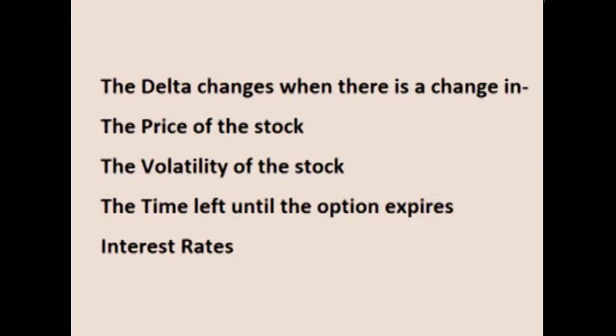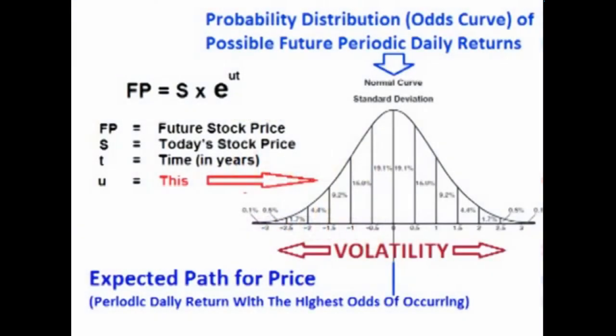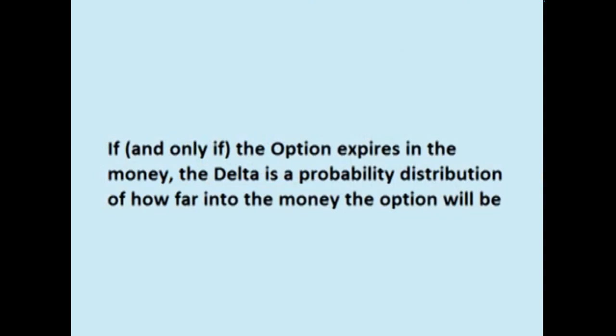Therefore, if that is true, a bunch of theories must apply — one can place offsetting trades and make more money than one can make on a risk-free investment such as a U.S. government bond, without risk of loss. Delta hedging must be adjusted for more than just changes in the price of the stock, as the delta also changes when there is a change in volatility, interest rates, or the time left until the option expires. Trading a hedged position is called delta neutral trading. An option's delta is derived using probability — one can create a probability or odds curve of what the future value of the stock will be. For a call option, the delta is derived from a probability distribution of the future value of the stock, multiplied by the probability that the stock will be above the option strike price. Put another way, if and only if the option expires in the money, the delta is a probability distribution of how far into the money the option will be.